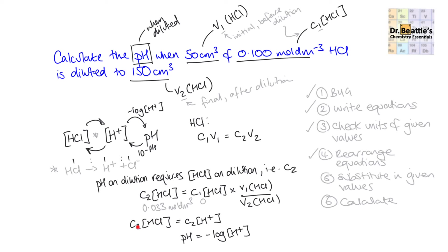We know the concentration of HCl gives the concentration of H⁺ ions because it's a strong acid in a one-to-one ratio. So when we put that into the calculator — minus log(0.033) — we get the answer to two decimal places as 1.48. This is sensible: you're using hydrochloric acid, so it's going to be a very acidic, low pH.